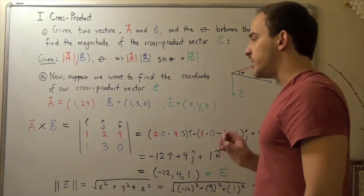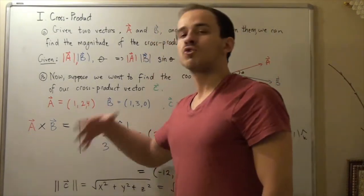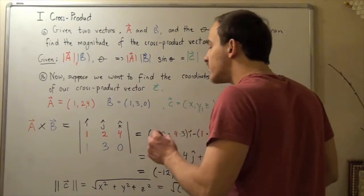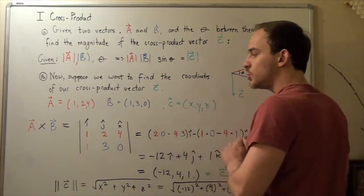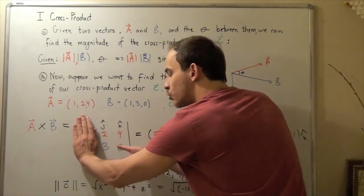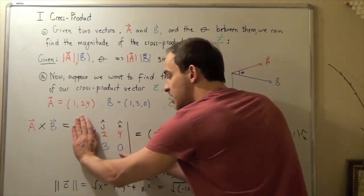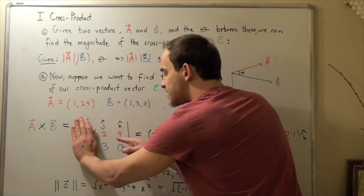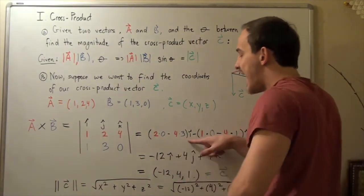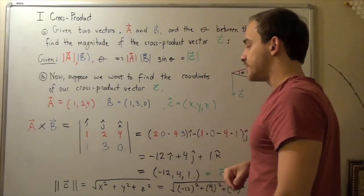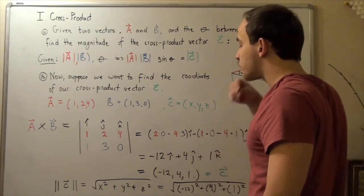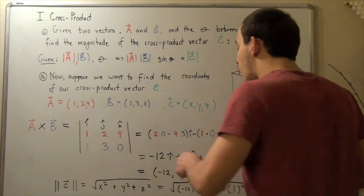This is why it's called the cross product — because we actually take the cross. To find the x-coordinate of the resulting vector, we cover up the first column and cross-multiply: 2 times 0 minus 4 times 3. This gives us the x-coordinate, and we multiply the whole thing by i-hat, because i-hat represents the x-direction.